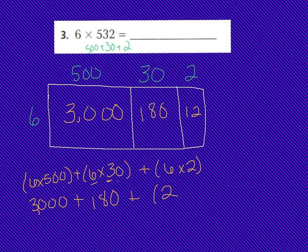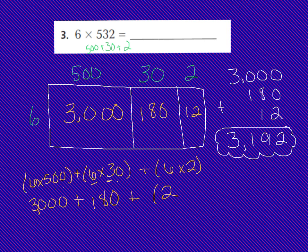Now that I have all my partial products filled in, I can go ahead and add them. I did 3,000 plus 180 plus 12. Those partial products added up give me my final product of 3,192. Boys and girls, I want you to make sure that you have the work done for this problem as well, underneath number 3.